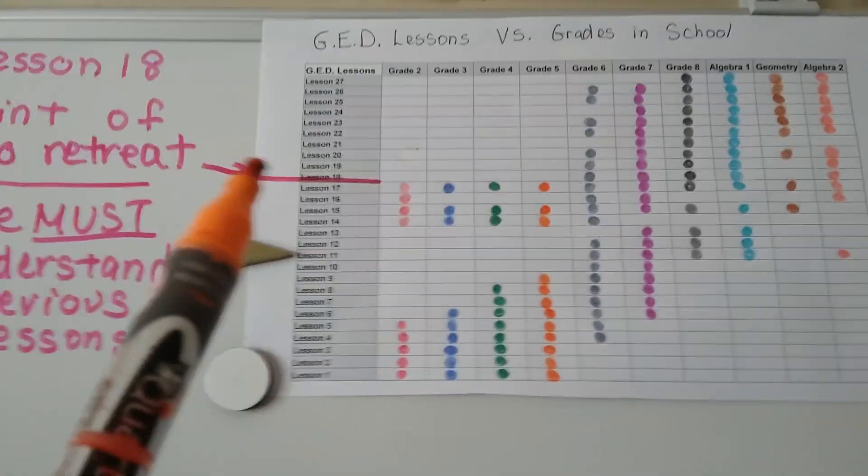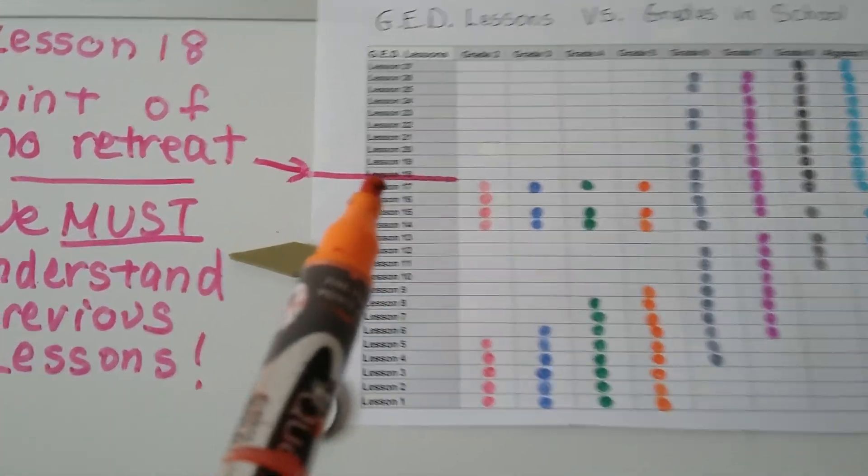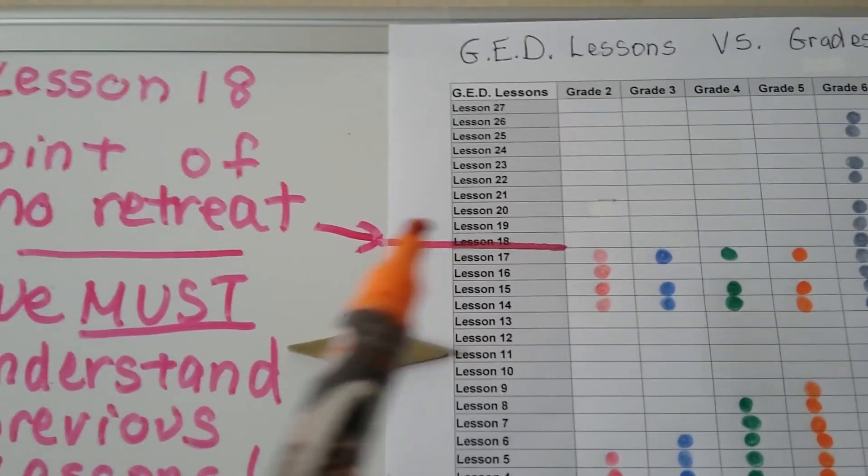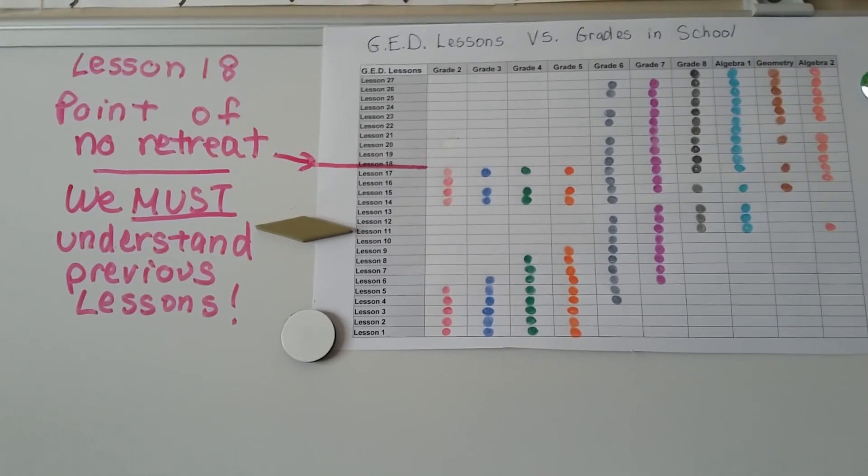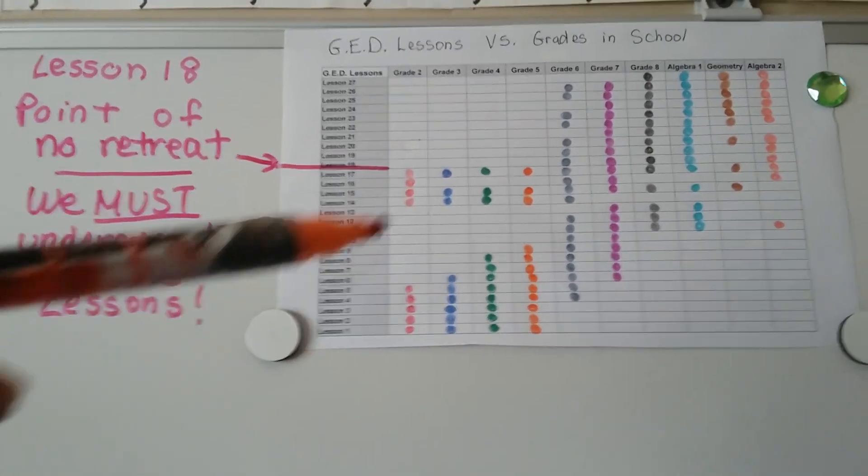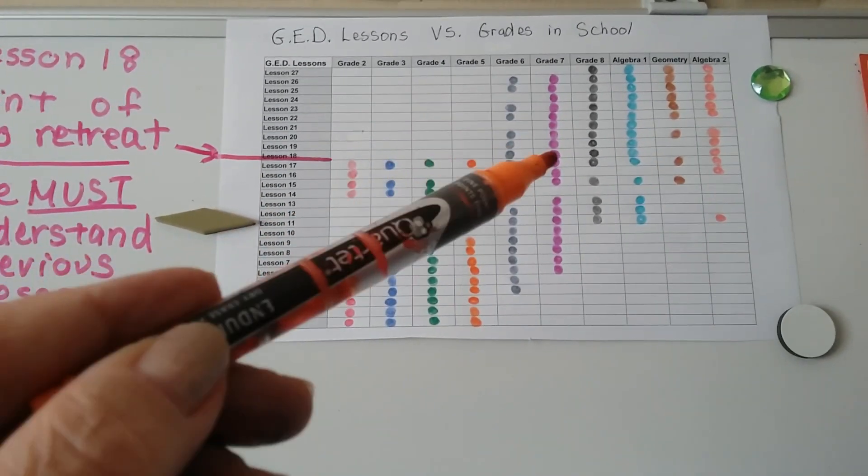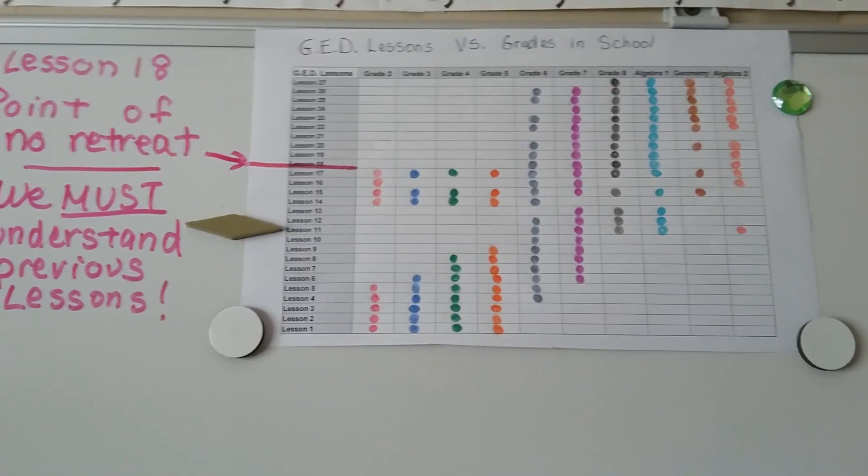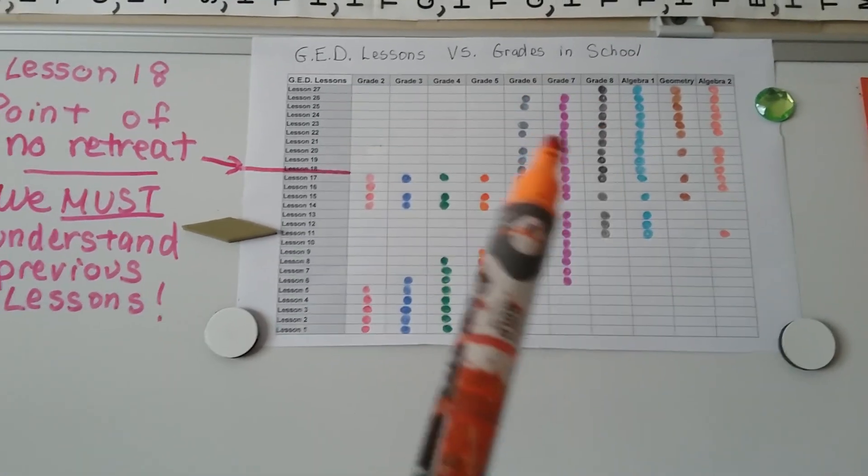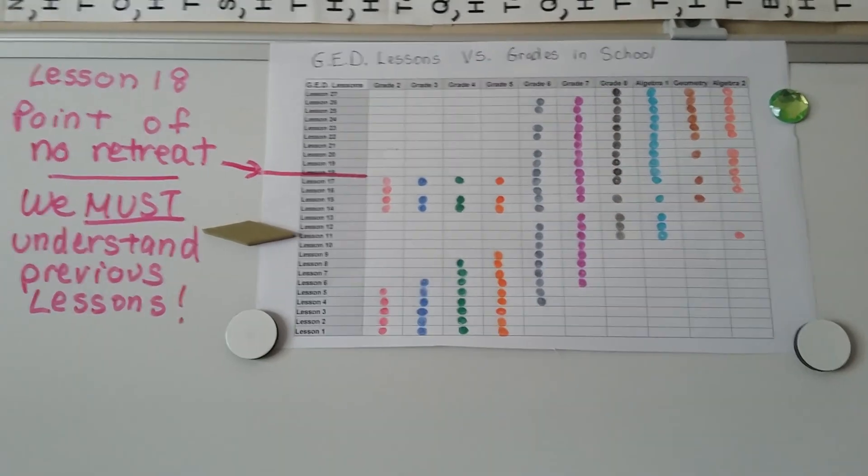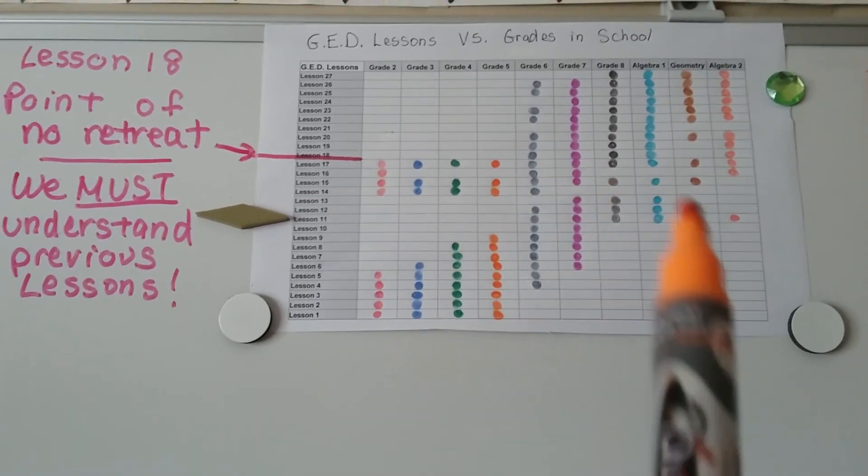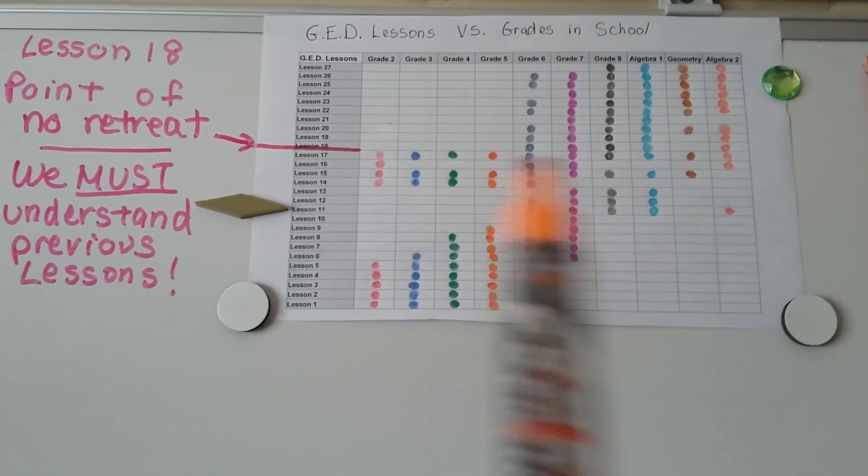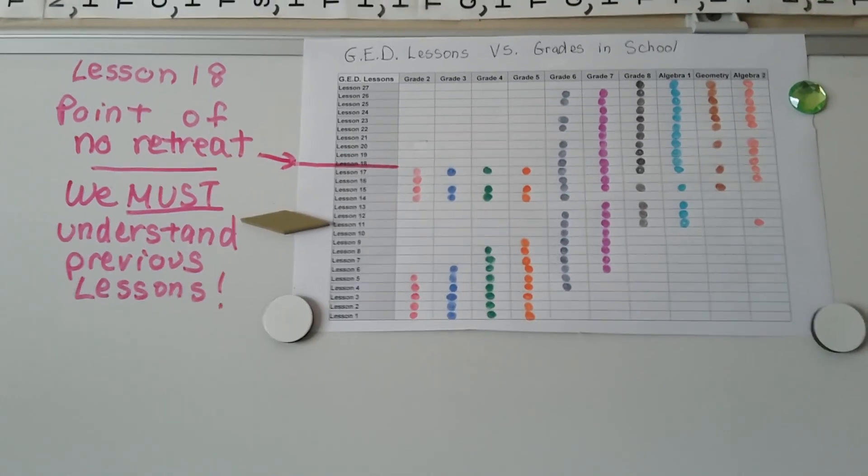We're right here. We're still going to do some early grade level stuff. This is measurements. But once we get to lesson 18 right here, that is the point of no retreat, the point of no return. You must understand all these previous lessons before we go above this and go to lesson 18 and on. Because this is all middle school, algebra, geometry, and algebra 2.